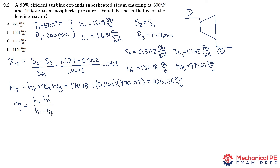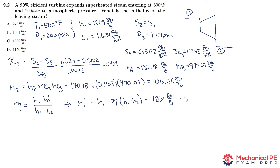Doing the algebra — multiply both sides by (h1 minus h2 ideal), then add h2 to the other side — our goal is to get h2 actual by itself. You get: h2 prime equals h1 minus efficiency times (h1 minus h2 ideal). Plugging in: 1269 minus 0.9 times (1269 minus 1061.26), which gives h2 actual approximately 1082 BTU per pound.